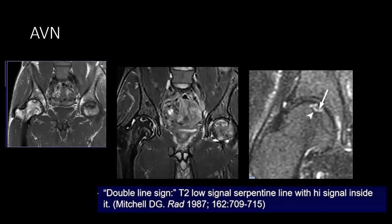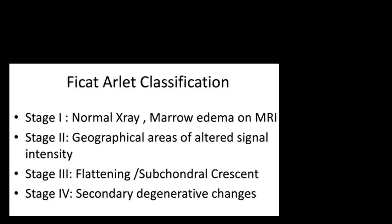This is bilateral avascular necrosis. There is a line we call the double-line sign, seen in T2 fat sat, where the peripheral area is dark — the sclerotic margin — and the inner rim is bright because of granulation tissue. This is the double-line sign of stage 2 AVN. Using the FICAT and ARLET classification: stage 4 is osteoarthritis changes; stage 3 is subchondral fracture with focal flattening of the femoral head articular margin or shape; stage 2 is a geographical region with subchondral edema; stage 1 is X-ray normal with mild edema. The most important is to identify stage 3 because it differentiates management.